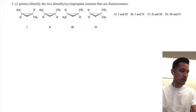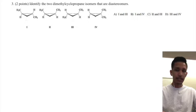Hey guys, so now we're going to be going over question three which asks us to identify the two dimethylcyclopropane isomers that are diastereomers.